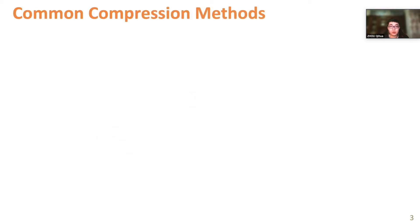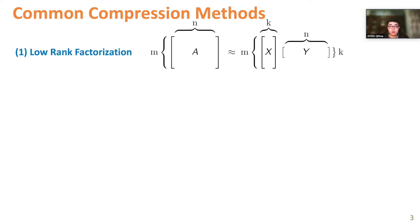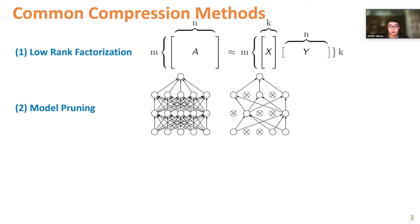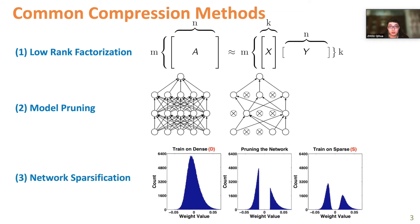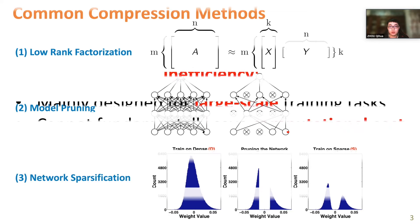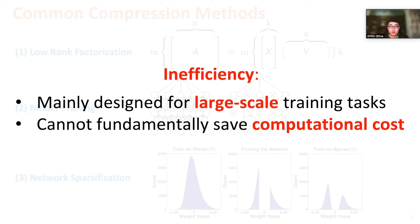Conventional model compression methods such as low-rank factorization, model pruning, and network sparsification are insufficient, as they are designed for large-scale training tasks and cannot well match the properties of tiny on-device learning.